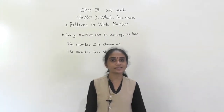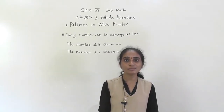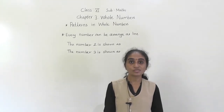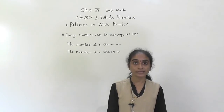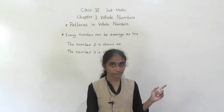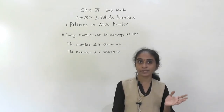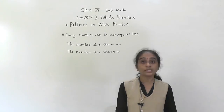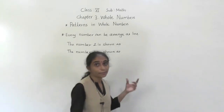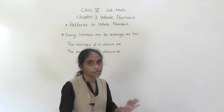Hello everyone, let's start patterns in whole numbers. If we represent each whole number by as many dots as its value, we observe that each whole number takes the form of elementary shapes, which can be a line, a square, a rectangle, or a triangle. Depending upon the number of dots, no other shape is allowed.